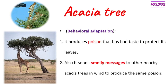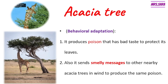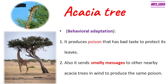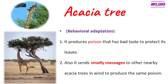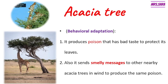Now we're going to talk about the behavioral adaptation of acacia tree. Acacia tree is a very tricky tree. It produces poison that has a bad taste to protect its leaves from hungry animals. If a giraffe is eating from an acacia tree, that tree will produce poison with a bad taste to protect its leaves, and the hungry giraffe will then go to another acacia tree.